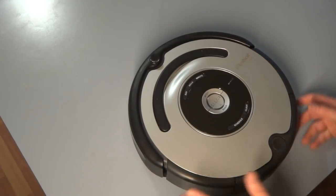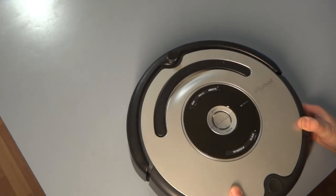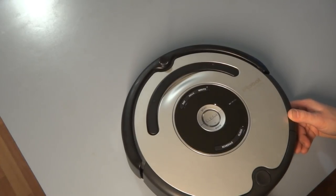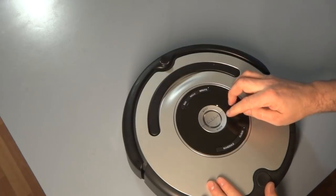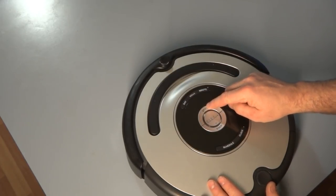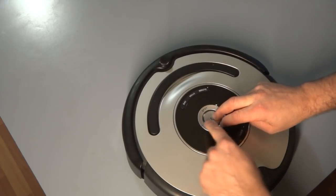So I'm going to show you how to take your part, but first of all I'm going to show you how to test it. Make sure it is the bumper sensors that are at fault. To do that you have to hold the dock and clean button at the same time while pressing the spot button six times. So hold dock and clean and press spot six times.